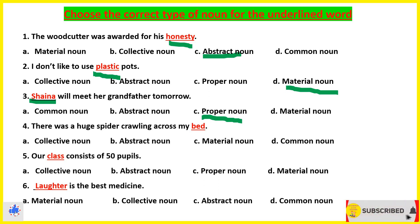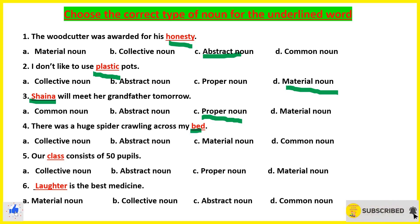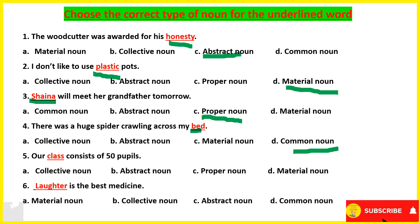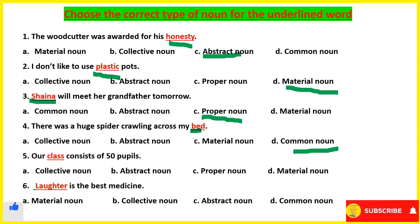Fourth question: 'There was a huge spider crawling across my bed.' Bed is a common noun. Coming to the fifth one: 'Our class consists of 50 pupils.' Class means a group of students. Whenever we talk about any group or any collection, at that time the noun will be collective noun.